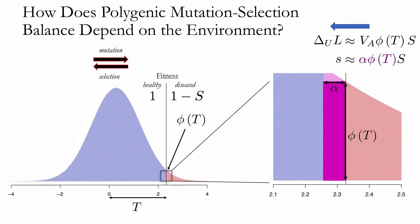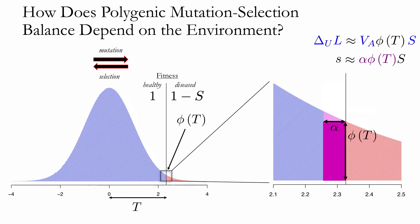Returning to the main thread: after increasing disease prevalence via a shift in the environmental component of liability, there will be an evolutionary response to restore mutation-selection balance. That response is carried out by many small shifts in allele frequency spread across a very large number of sites, meaning equilibrium can be restored with negligible change to either the mutational bias or the additive genetic variance. Because the fitness cost remains constant, restoring mutation-selection balance simply involves restoring phi of t to its previous value — in other words, the population re-evolves the same prevalence it had before the environmental change.